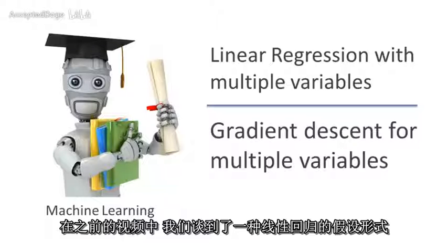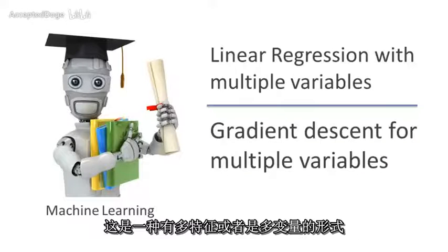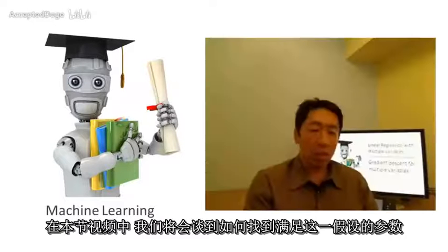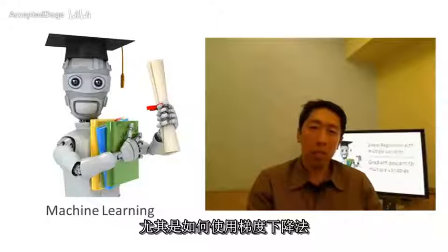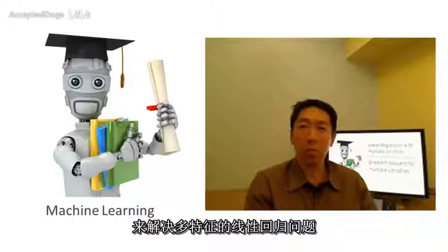In the previous video, we talked about the form of the hypothesis for linear regression with multiple features, with multiple variables. In this video, let's talk about how to fit the parameters of that hypothesis. In particular, let's talk about how to use gradient descent for linear regression with multiple features.